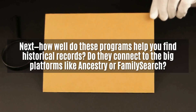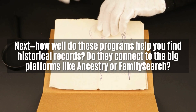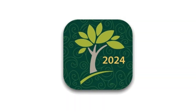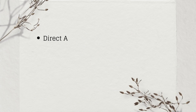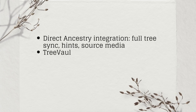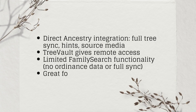Next, how well do these programs help you find historical records? Do they connect to big platforms like Ancestry or FamilySearch? FTM 2024 offers direct Ancestry integration with full tree sync, hints, and source media. TreeVault gives remote access. It has limited FamilySearch functionality — no ordinance data or full sync — but it's great for Ancestry subscribers.